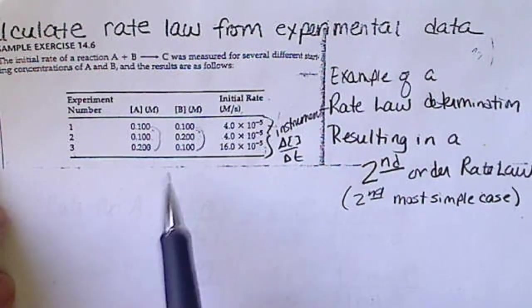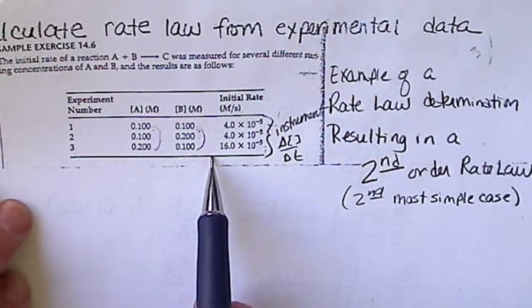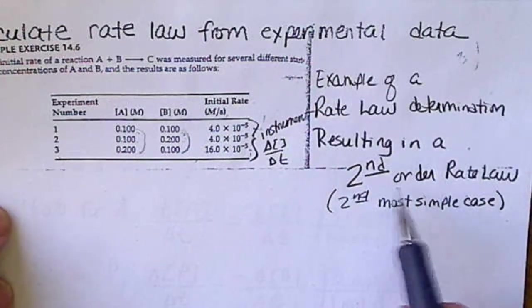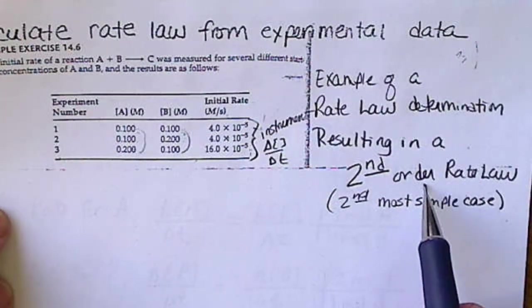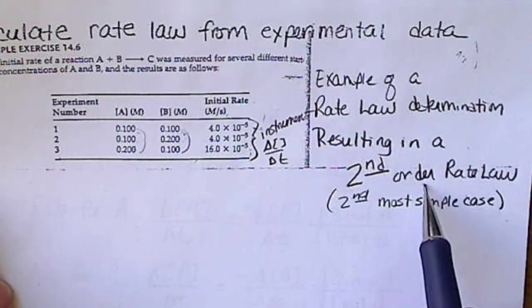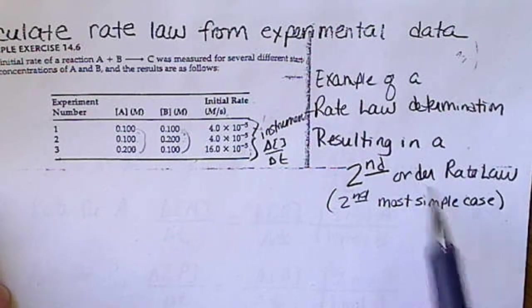the rate law, which must be determined experimentally, is going to end up being second order. That's one of our special cases of the rate law.